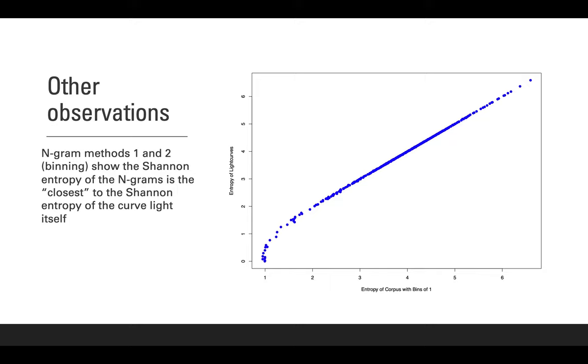We also observed that n-gram methods one and two, the binning ones, show that the Shannon entropy of the n-grams to be the closest to the Shannon entropy of the light curve itself. We are still investigating the usefulness of this result and whether this is meaningful for our analysis and our purpose of creating taxonomies and vocabularies of stars.